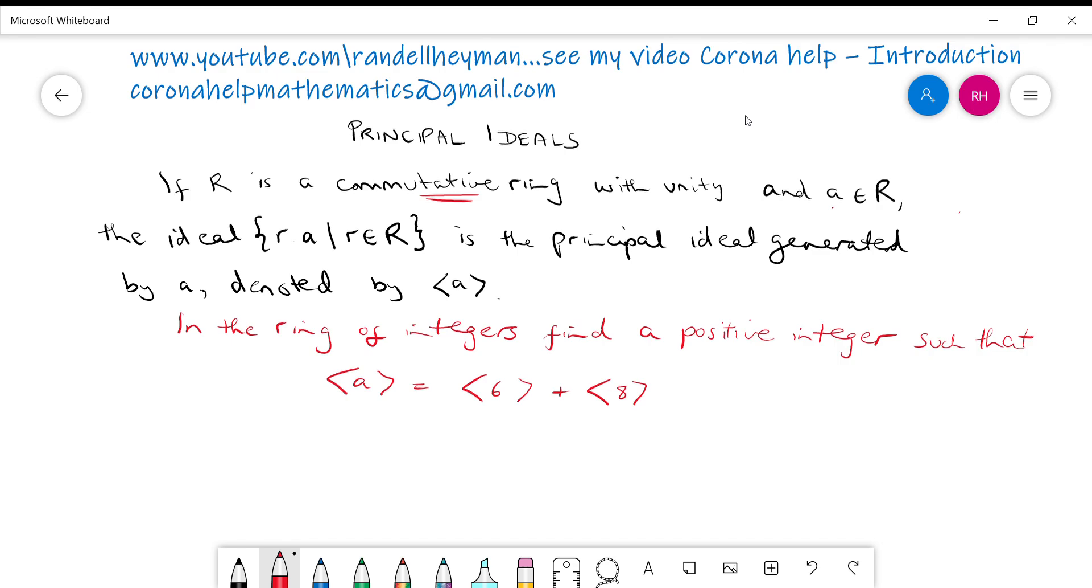So I've got another question here about principal ideals and generators. So I thought we'd have a look at that. Here's the question. In the ring of integers find a positive integer. That should actually say a positive integer A such that this is true.